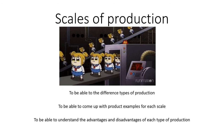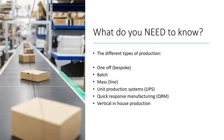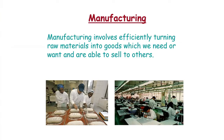In today's video we're going to look at scales of production. You need to know the different types of production: one-off or bespoke, batch, mass production, unit production systems, QRM, and vertical in-house production. The term manufacturing, at its most basic, describes how companies take raw materials and turn them into goods or products sold to consumers. Depending on what you're manufacturing, the type of manufacturing you do will vary.